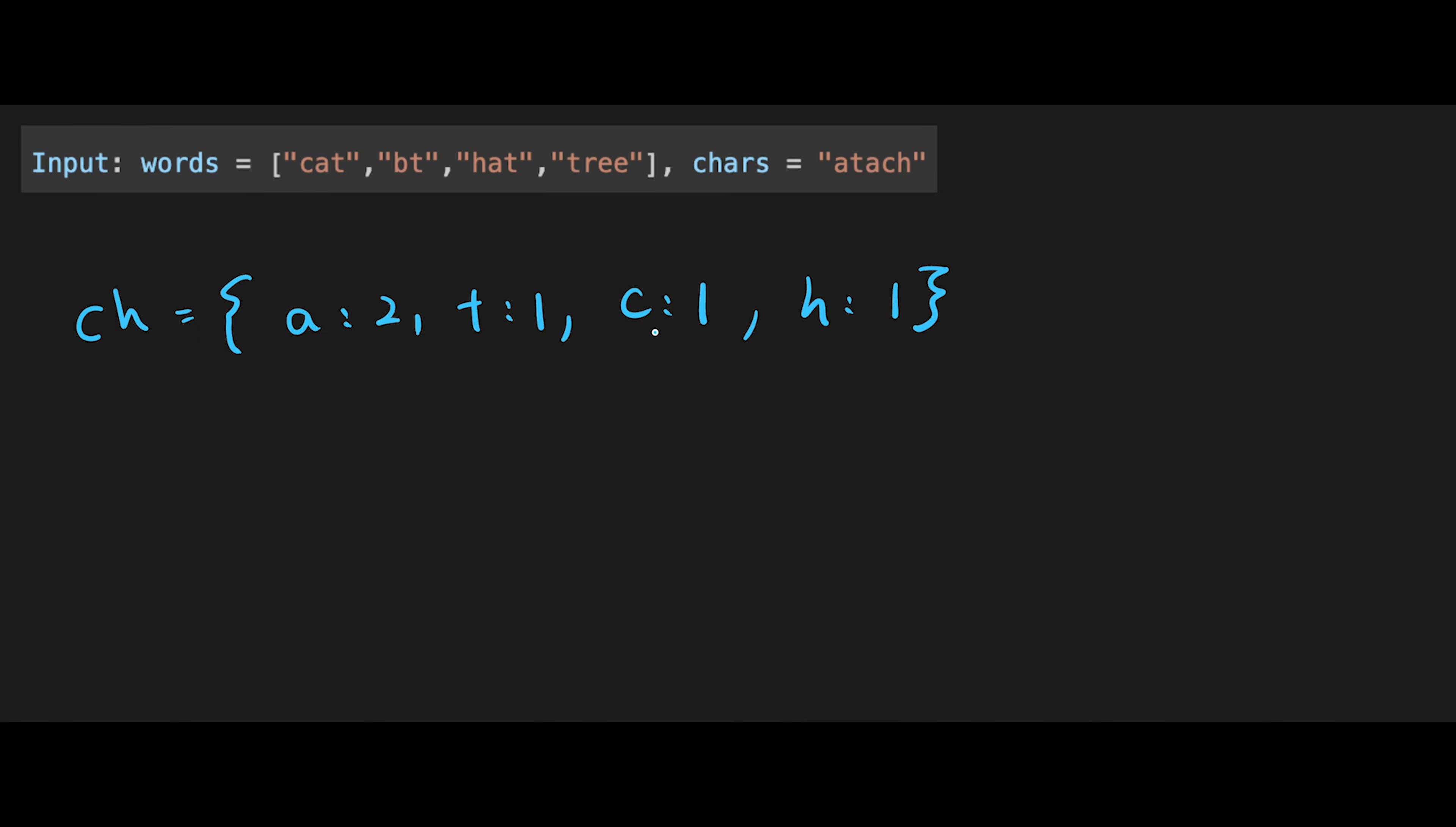Then check characters of words input one by one. If we find the same character in ch hash map, countdown the value with like minus 1. Okay, so let's see one by one. First character is cat.